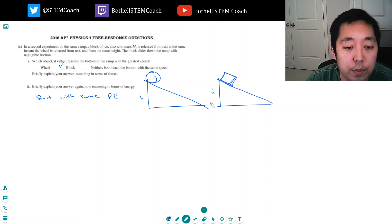Now they start at the same height, which means they start with the same potential energy. But by the bottom, all of that potential energy here, mgh, has been converted into rotational energy plus kinetic energy. So this has one half I omega squared plus one half mv squared. And this has one half mv squared.